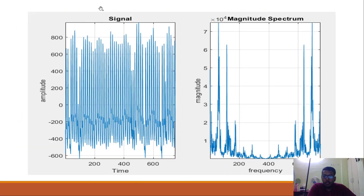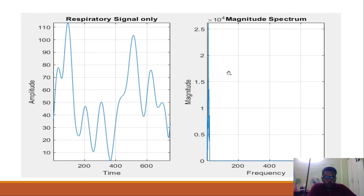Now let's see the plots. Here we can see the combined PPG and respiratory signal, and this is the magnitude spectrum of the same. The respiration signal is only restricted to very low frequencies, so we zero out the higher frequencies. Here we see that we zeroed all the large frequencies, and then we take the inverse Fourier transform. Taking the inverse Fourier transform, we get the respiration-only signal.